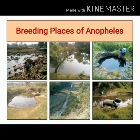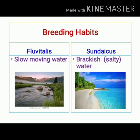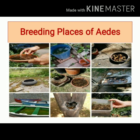Breeding habits of mosquitoes: Breeding of Anopheles mosquito occurs in clean water like wells and fountains. Anopheles fluviatilis prefers to breed in slow-moving water, and Anopheles sundaicus prefers to breed in brackish or salty water.